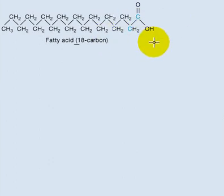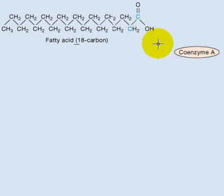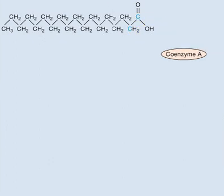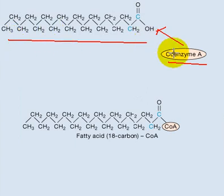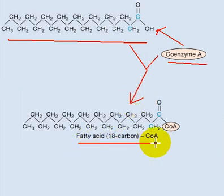What happens in beta-oxidation? In beta-oxidation, coenzyme A comes and binds to the end region of the fatty acid. So when you take the fatty acid and bind it to coenzyme A, the fatty acid combined with coenzyme A gives you fatty acyl-CoA.